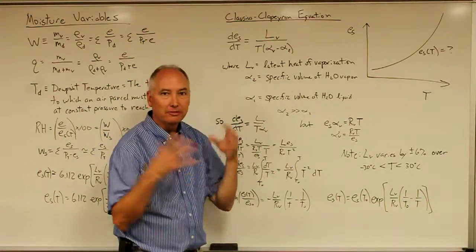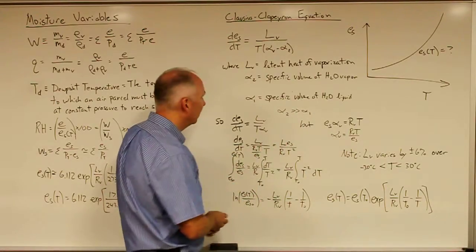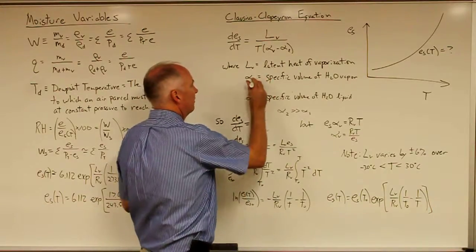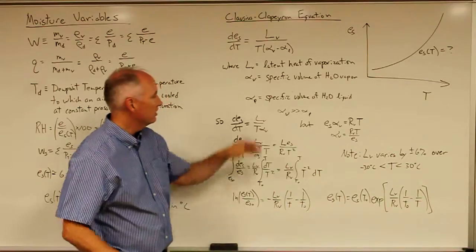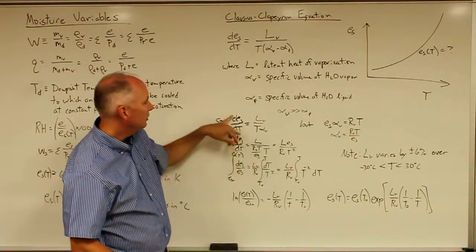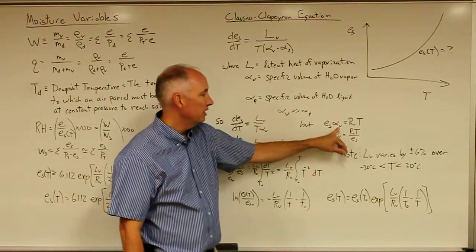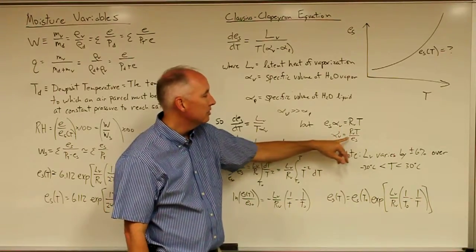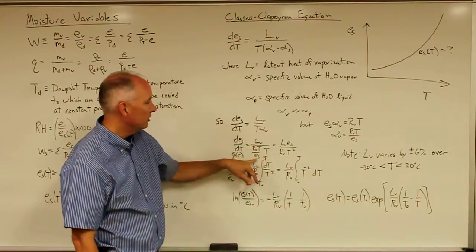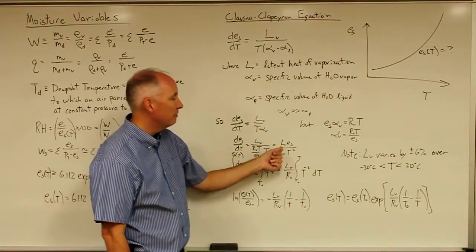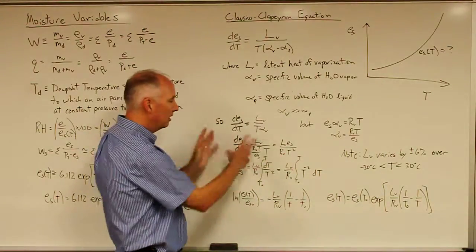The specific volume of the vapor is much greater for a unit mass than the specific volume of the liquid. Since the specific volume of the vapor is much, much greater than the specific volume of the liquid, this allows us to simplify the Clausius-Clapeyron equation to dE_s/dT = L_v × T / α_V. Recalling that the specific volume of the vapor equals r_V × T / E_s, we substitute to get dE_s/dT = (L_v × E_s) / (r_V × T²). Bringing like terms to each side yields dE_s / E_s = (L_v / R_V) × dT / T².